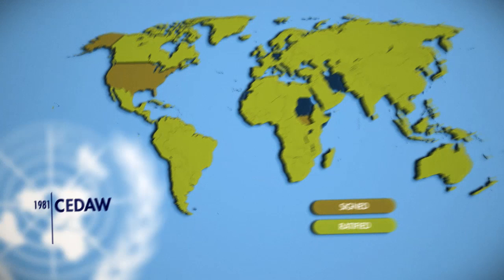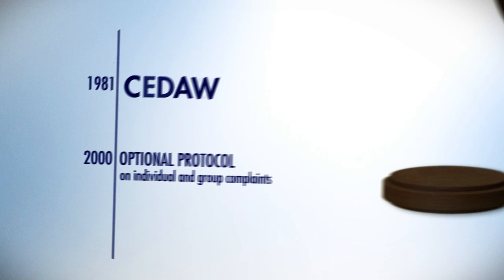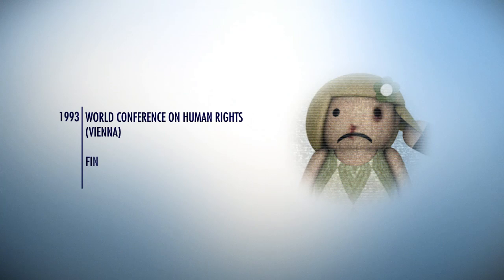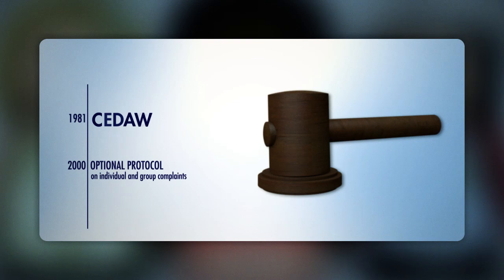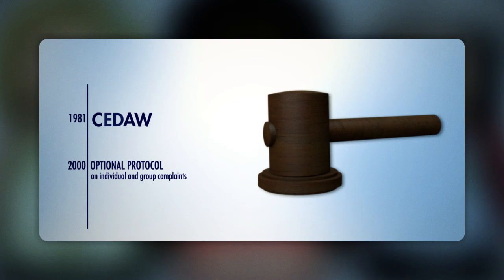In 2000, an optional protocol allowing individuals or groups to submit a complaint entered into force, making it easier to enforce rights. The final declaration of the World Conference on Human Rights, held in Vienna in 1993, was the first document to also describe violence against women in the private sphere as a human rights violation and to condemn it. Despite this progress, the extreme discrimination suffered by women remains one of the biggest problems in the human rights system.